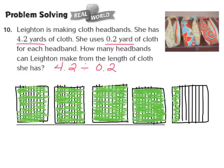Your model should look similar to mine. We have 1, 2, 3, 4 tenths completely shaded in to represent the 4 in the 1's place. And then we have 1, 2 more tenths shaded in to represent the 2 tenths. Our model now represents our dividend of 4 and 2 tenths.